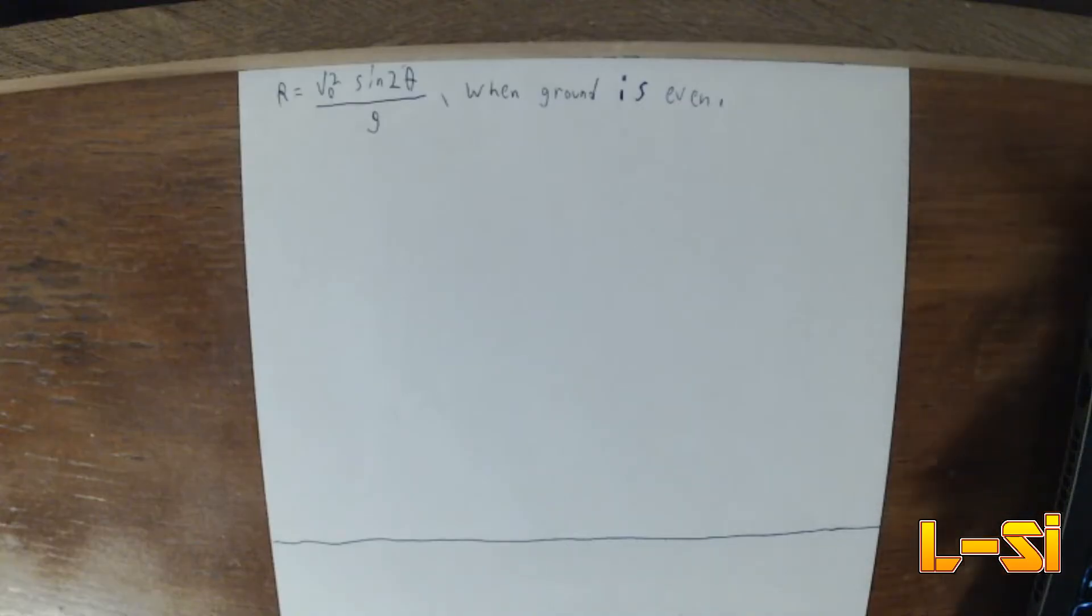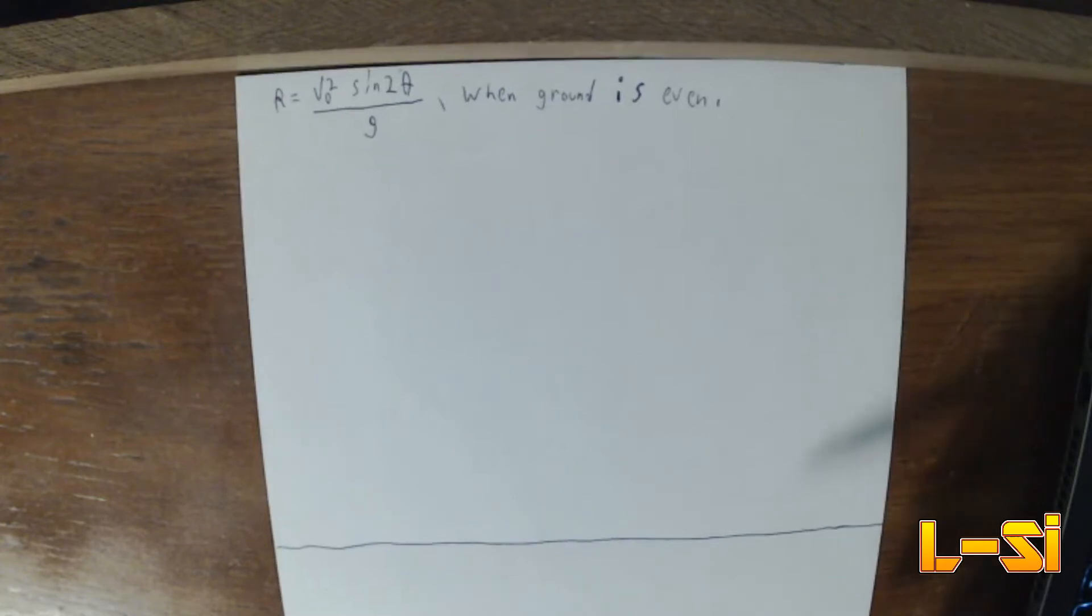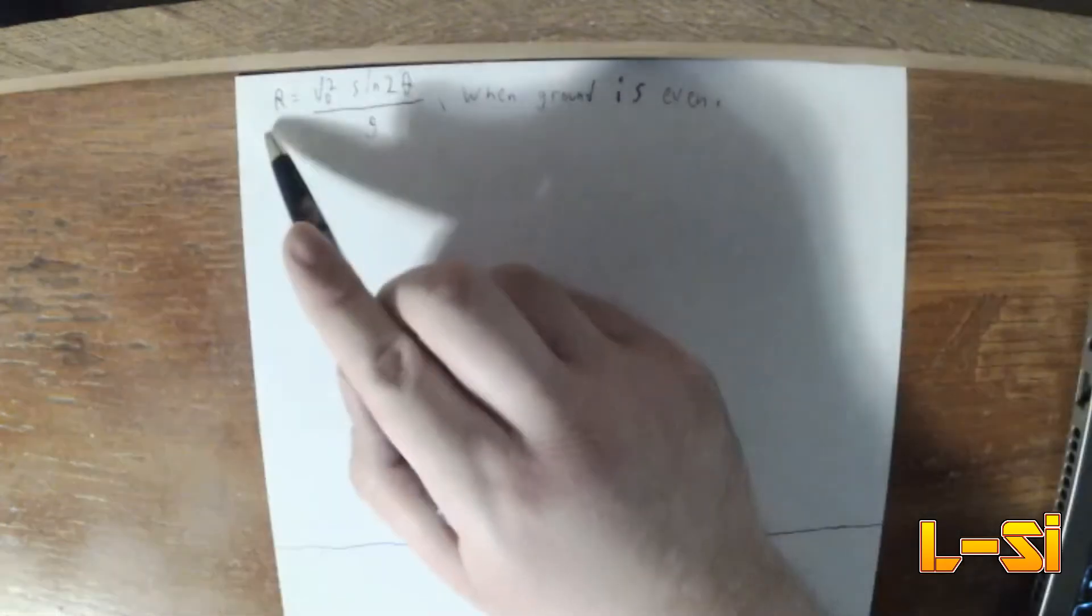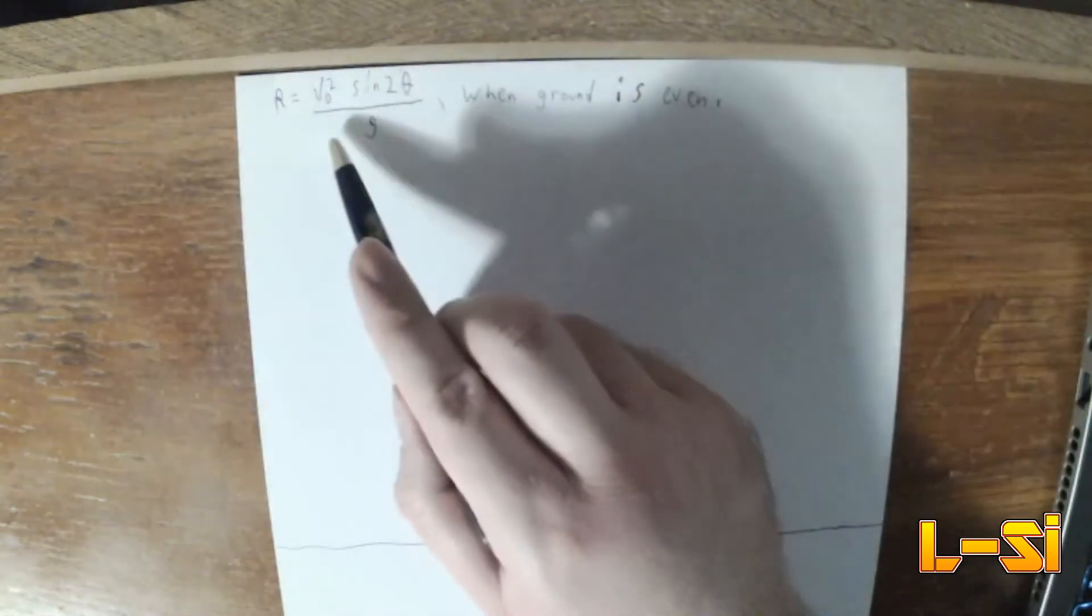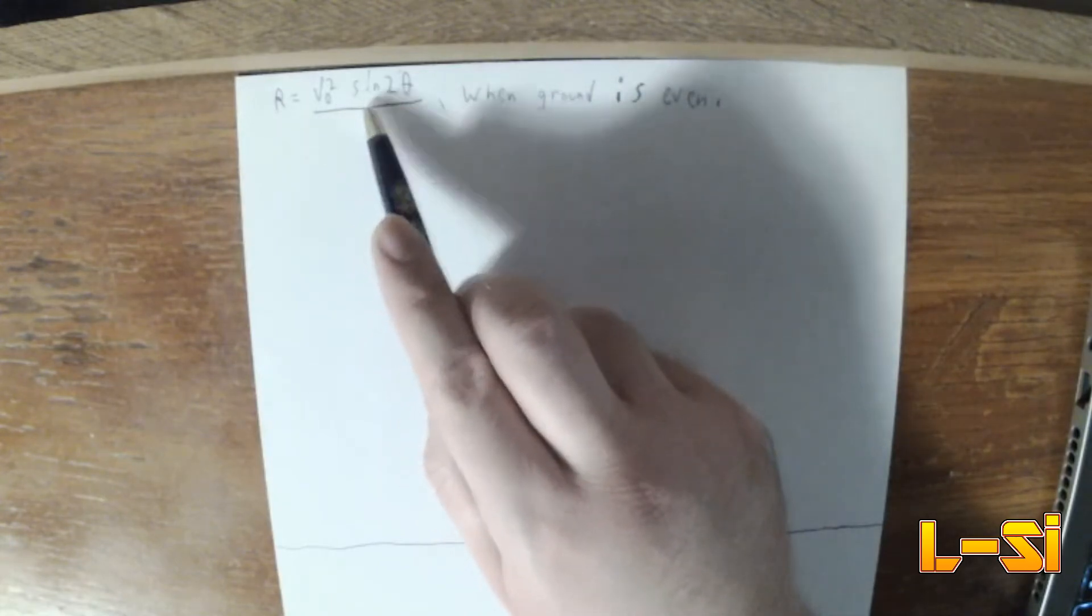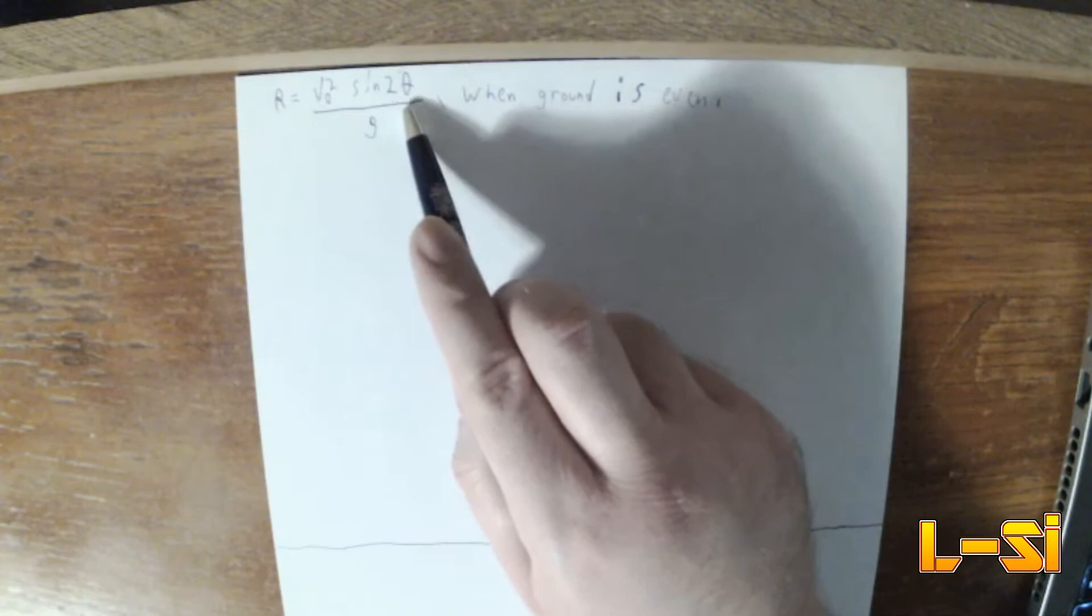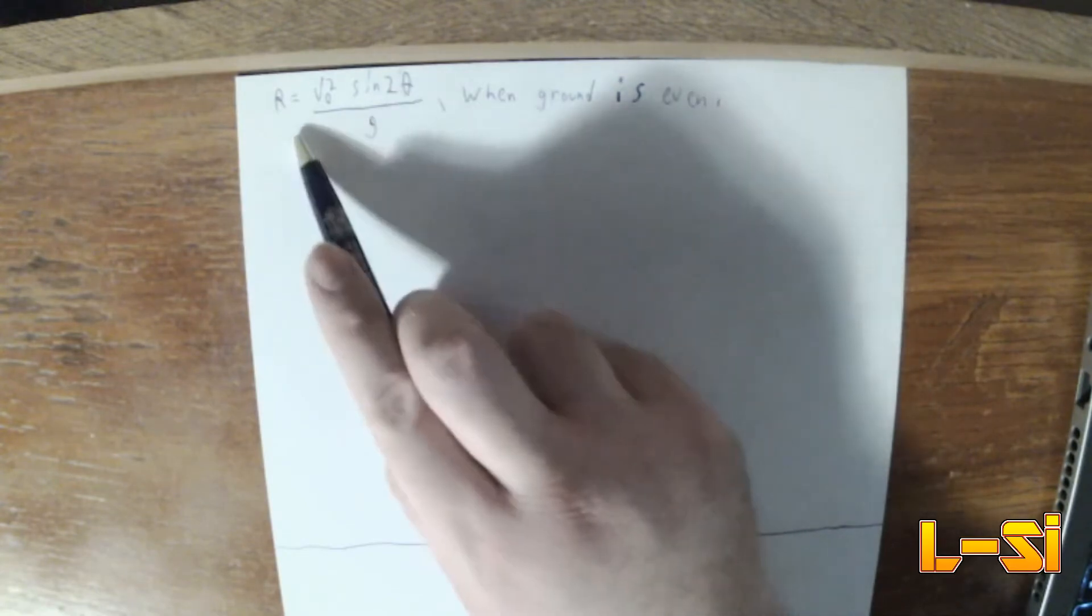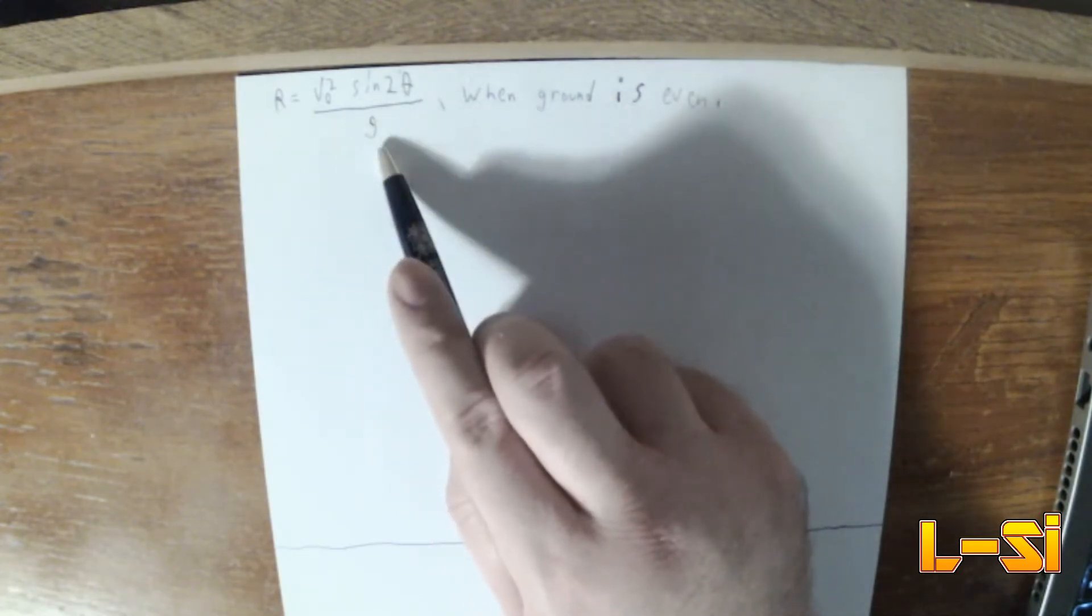Hello. If you watched my last video, you will have seen that I used algebra to find that the max range of a projectile on even ground can be found if you take its initial velocity squared, multiply it by the sine of twice whatever your launch angle is, and then divide all that by your acceleration due to gravity.